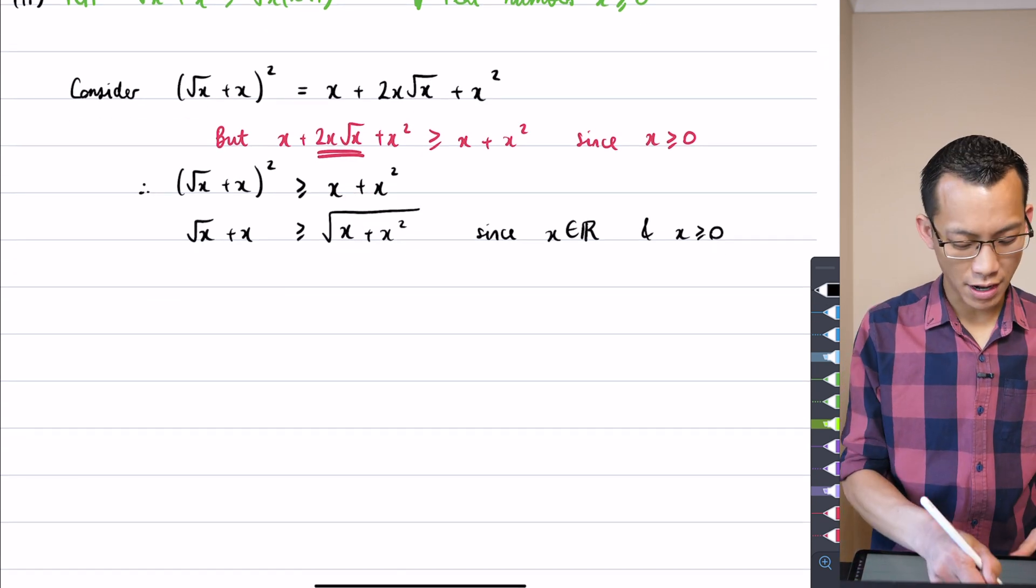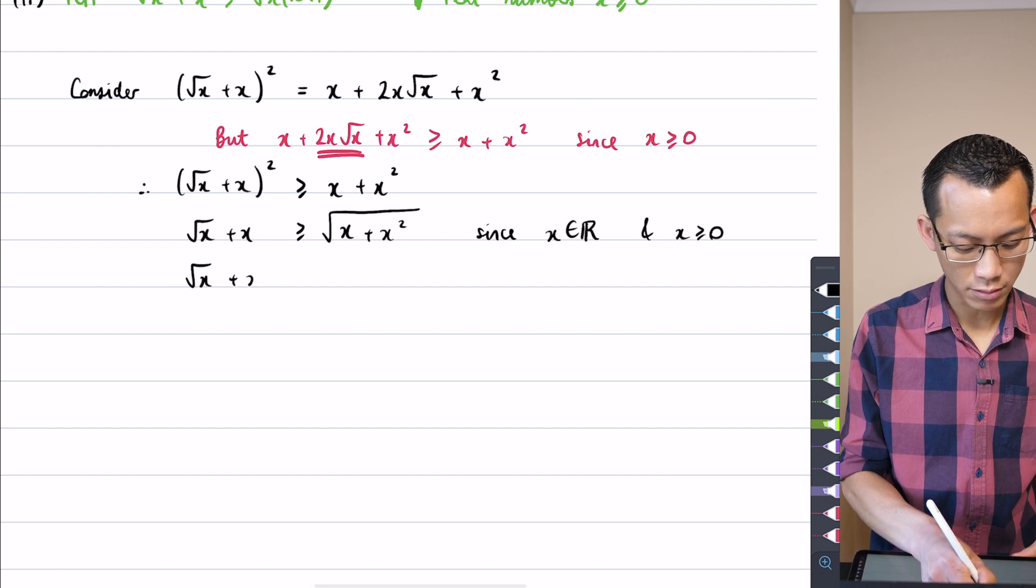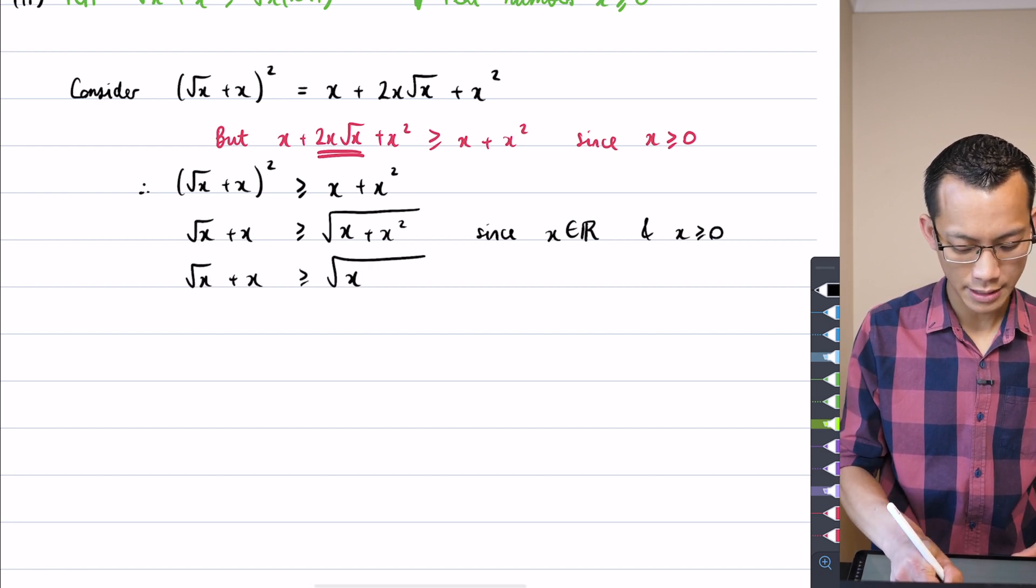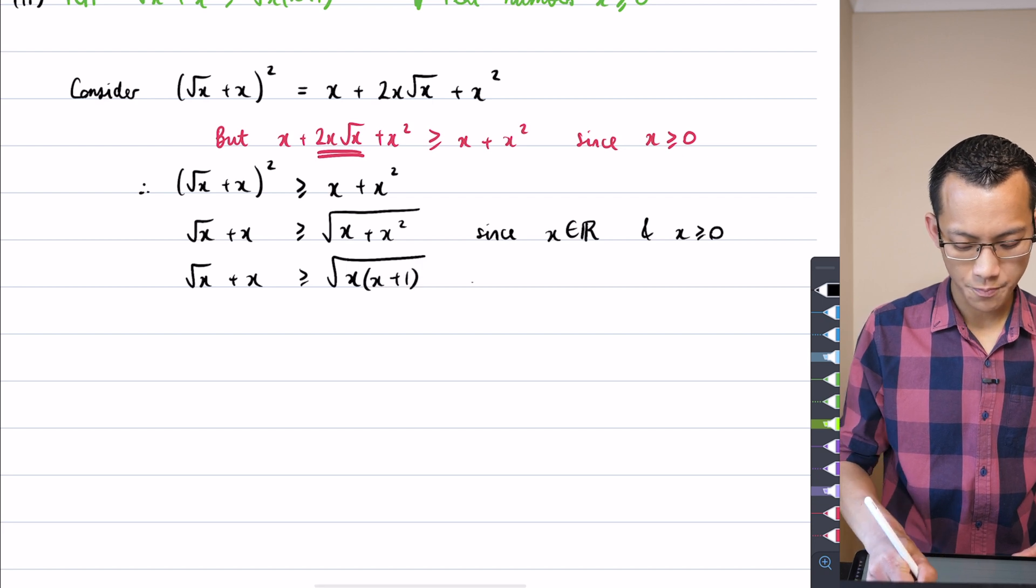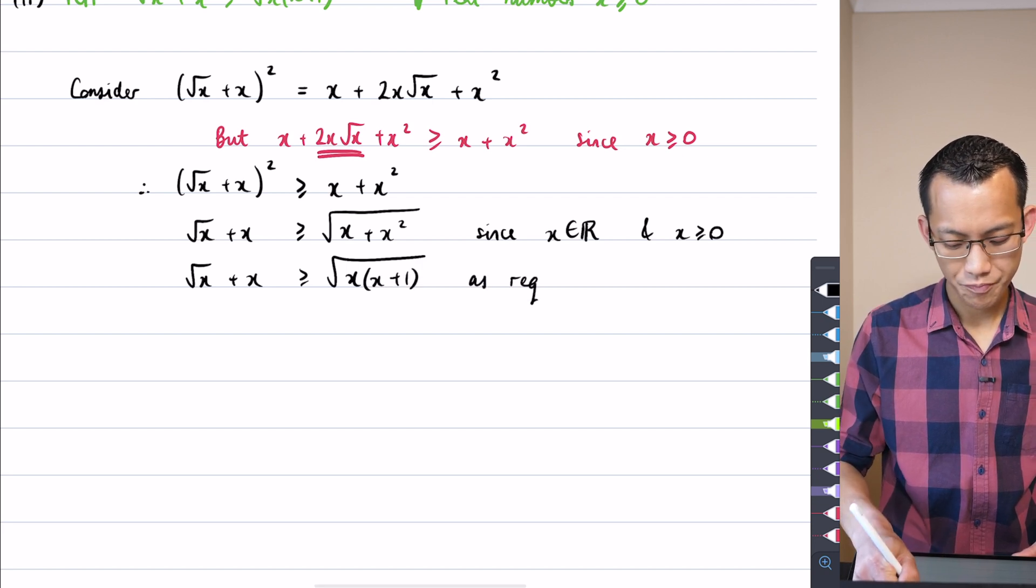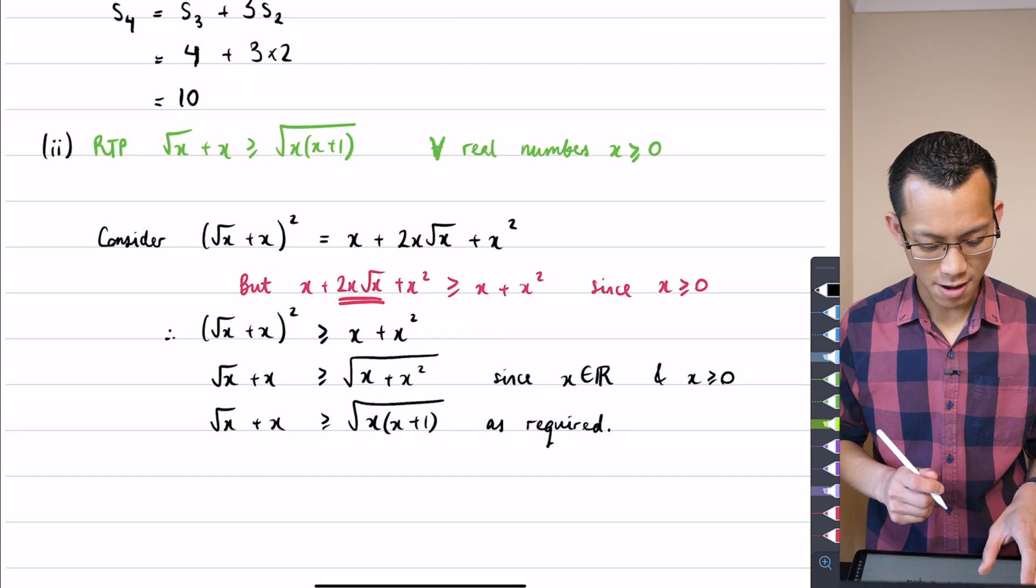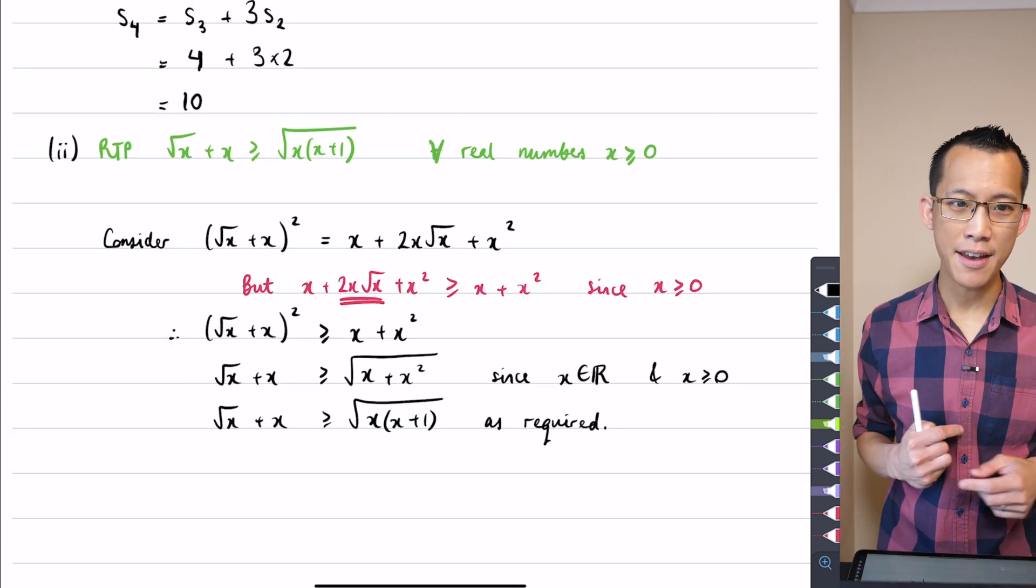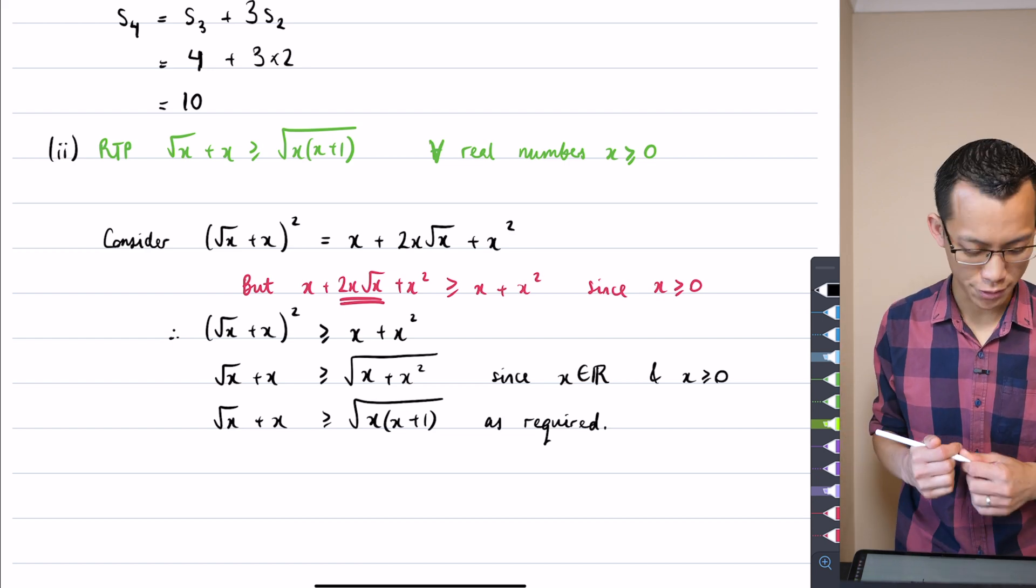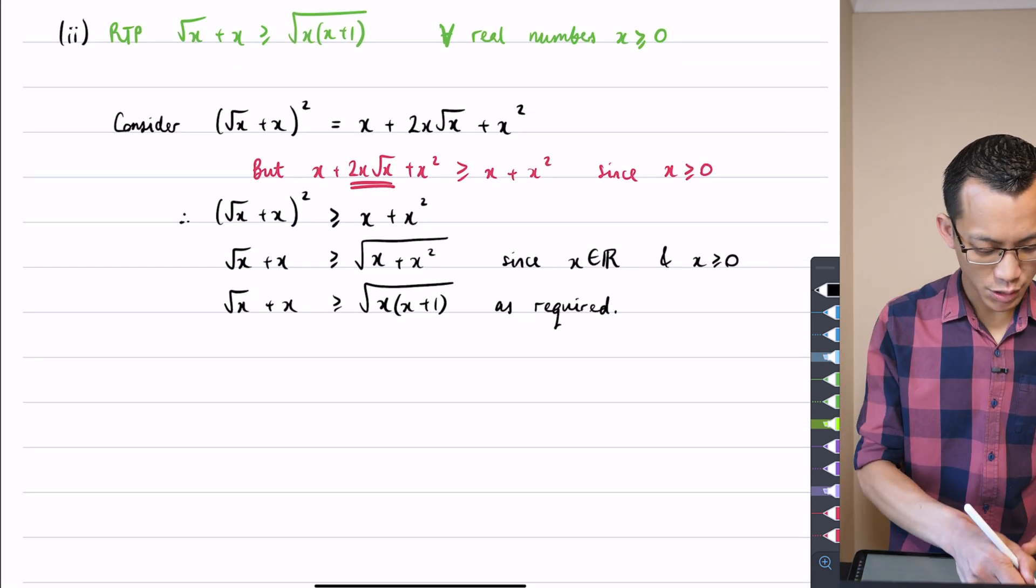At this point, we're pretty much done. I just need to factorize that thing underneath the square root, and I am honed. So I'll just take that x out, x(x+1), as required. Okay, so there was part two. Like I said, not many lines are working. You just need to think carefully about how you can get an expansion that'll do the job for you.